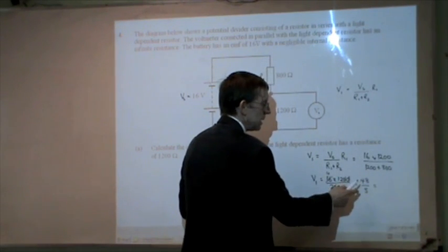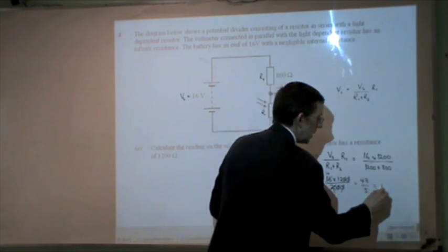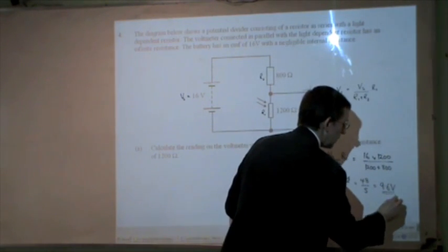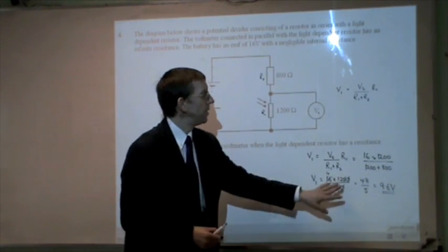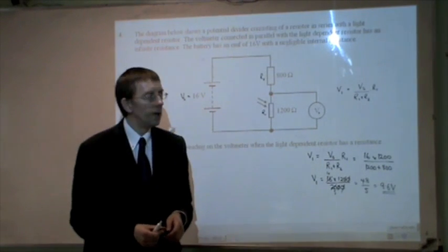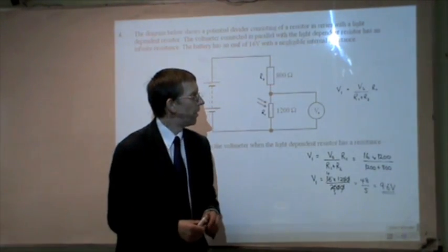Well, 48 divided by 10 is 4.8. So that's 9.6 volts. So that's the first way, just remembering the potential divider formula.